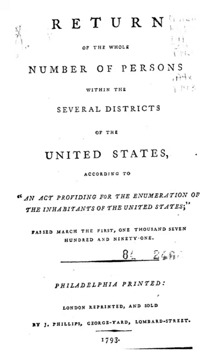OMB defines the concept of race as outlined for the U.S. Census as not scientific or anthropological, and takes into account social and cultural characteristics as well as ancestry, using appropriate scientific methodologies that are not primarily biological or genetic in reference. The race categories include both racial and national origin groups. Race and ethnicity are considered separate and distinct identities, with Hispanic or Latino origin asked as a separate question.